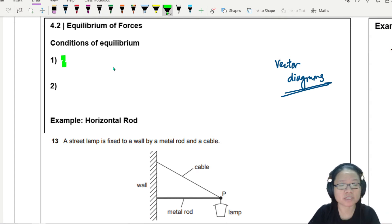Let's just recall them. Number one, it should have zero net force. Let me change the color. There we go. Zero net force in any direction.